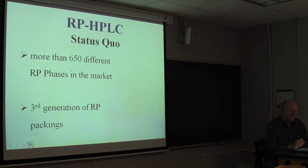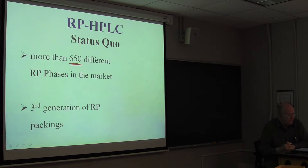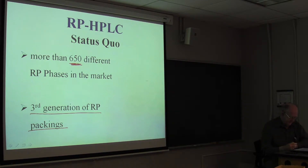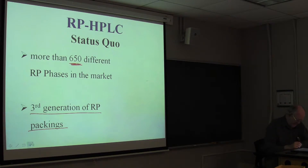Thirty years ago, I never thought it would get to this point, but there are now 650 different reverse phases currently available on the market. Some of them are interchangeable, but they all aren't interchangeable. We're now in the third generation of reverse-phase materials, and it's important to understand that these materials have changed rather radically since they were introduced. Some analytical methods developed 30 years ago are still being used, especially in the pharmaceutical industry, and if a method was developed for a Generation 1-type material, it's not going to work very well on a Generation 3-type material.